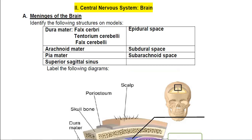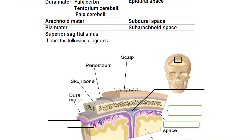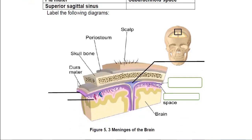Now we move to the brain — certainly the most complicated part we've learned about in the lab so far. This diagram looks at the skull, scalp, brain, and all the different layers. There are more layers than you think. Obviously the scalp is on the outside, and under that we have the skull bone with the periosteum. Under that we have a number of layers called the meninges.